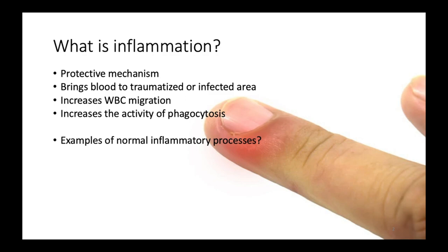We're taking a look at anti-inflammatory drugs. To understand anti-inflammatory drugs, we first have to understand the process of inflammation — how it happens and why it happens. Inflammation is a protective mechanism for the body: it brings blood to traumatized or infected areas, increases white blood cell migration, and increases the activity of phagocytosis. Examples of normal inflammatory processes include swelling around a laceration or swelling around a cruciate ligament after injury — these are fairly normal, typically acute, and present to assist the healing process.